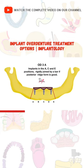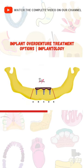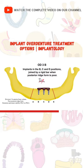In OD3a, as you can see here, the implants have changed their position a little bit — now we have implants at A, C, and E, and these are joined by a bar when the posterior ridge form is good. In OD3b, we again have implants at B, C, and D position, and they are joined by a bar when the posterior ridge form is poor.